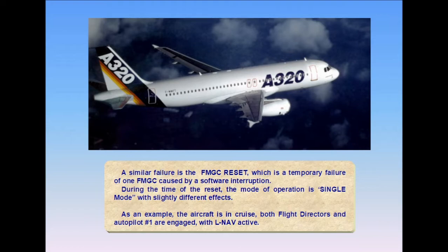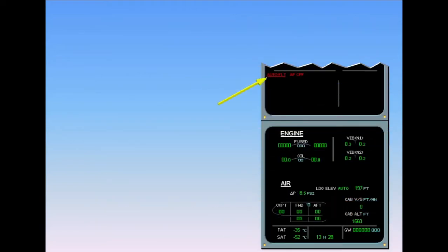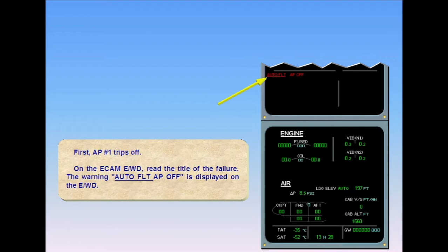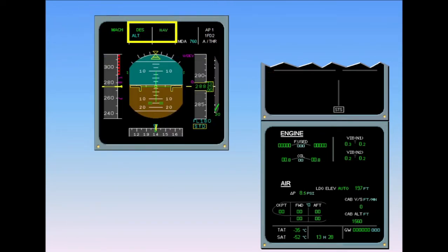As an example, the aircraft is in cruise with both flight directors and autopilot number 1 engaged, with LNAV active. First, autopilot number 1 trips off. On the ECAM engine warning display, read the title of the failure: the warning 'Autoflight AP Off' is displayed on the EWD. Also note that since the aircraft was in managed LNAV, the flight director has reverted to heading/vertical speed basic modes.